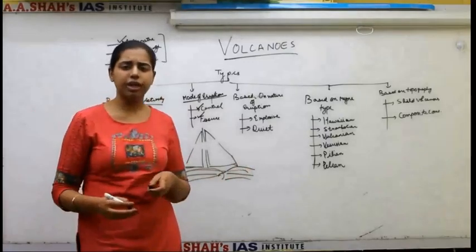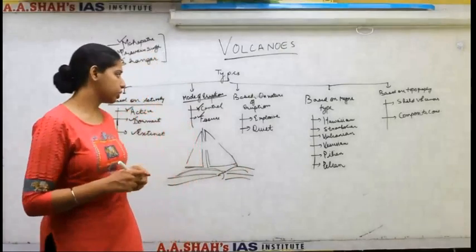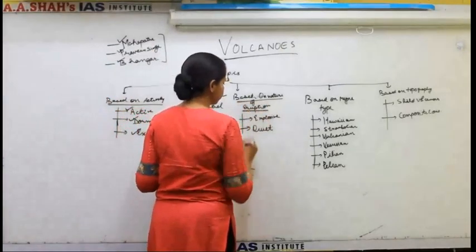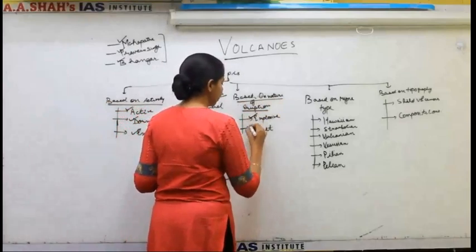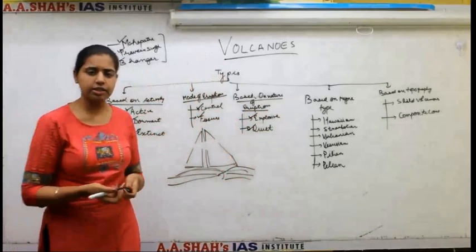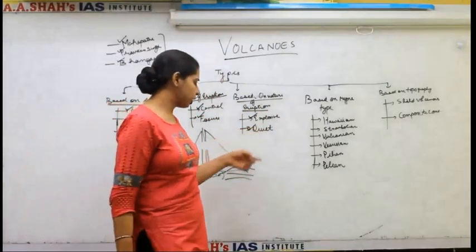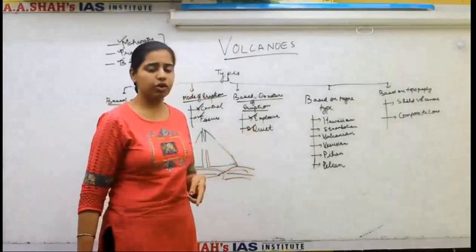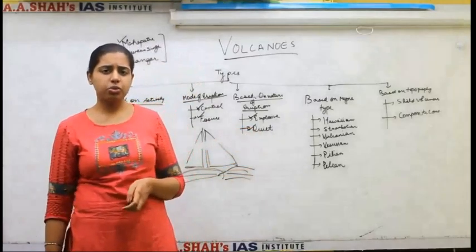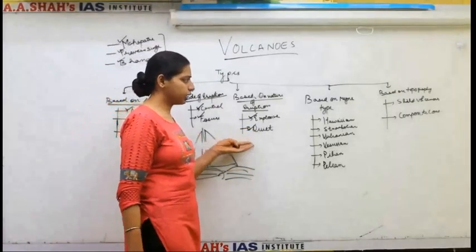You might have heard the term Deccan Traps in India — those are a fissure type of eruption. Based on the nature of eruption, volcanoes can be explosive or quiet. Explosive volcanoes erupt with a lot of explosions, while quiet volcanoes have very calm eruptions with no explosion.